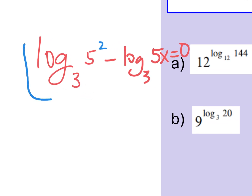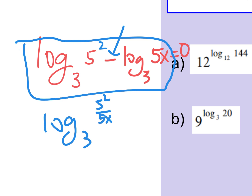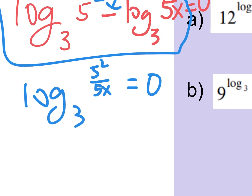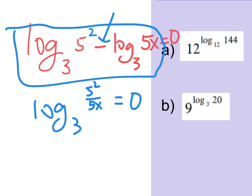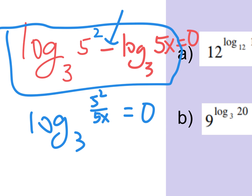Is there any way to put these two logs together? Marcus says: since minus is divide, yes — log base three of five squared divided by five x. I'm going to leave it as five squared because if you can factor it, you should. And then that's all equal to zero. Do you get what happened? The subtraction of logs turned into a division inside one log — we condensed those two logs together.